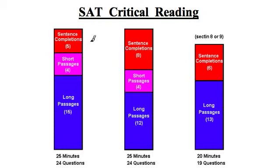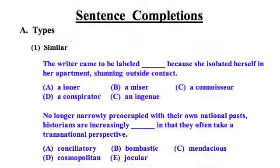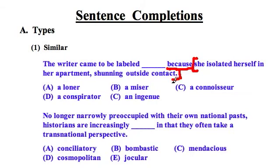If you don't know the meaning of the words in the answer choices, it's going to make it harder. One way to classify sentence completion questions is according to their structure. They can be similar, opposite, or definitional. For example: 'The writer came to be labeled blank because she isolated herself in her apartment, shunning outside contact.' The word 'because' gives a clue that the relationship is similarity or parallelism. The part without the blank gives you clues — she isolated herself, so you could say she is a recluse or a loner.